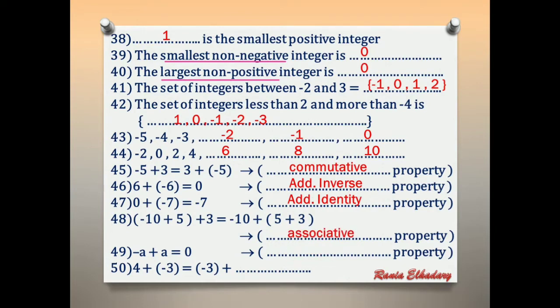Number 49: negative a plus a equals 0. We have a number and its inverse. The answer is 0. The property is additive inverse.